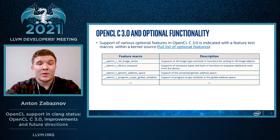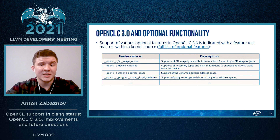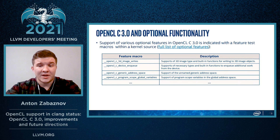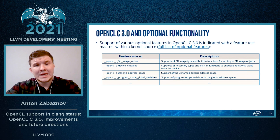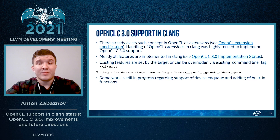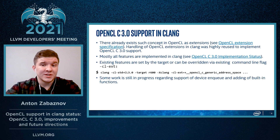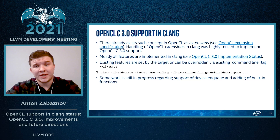In the new specification, feature markers were introduced to indicate the availability of optional functionality. Those feature markers are defined by the target, depending on whether the target architecture supports a feature or not. It's worth mentioning that there are no big conceptual changes done in Clang, with mostly all of the features supported.